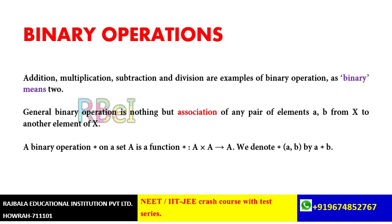An important property of binary operation is the closure property. A multiplication operation on a non-empty set has closure property if a belongs to set A and b belongs to set A, then a into b will also belong to set A — this is the closure property. For example, addition on the set of all irrational numbers is not a binary operation. Multiplication of irrationals is also not a binary operation. Subtraction of natural numbers is also not a binary operation — if you subtract two natural numbers, the result may not be a natural number.